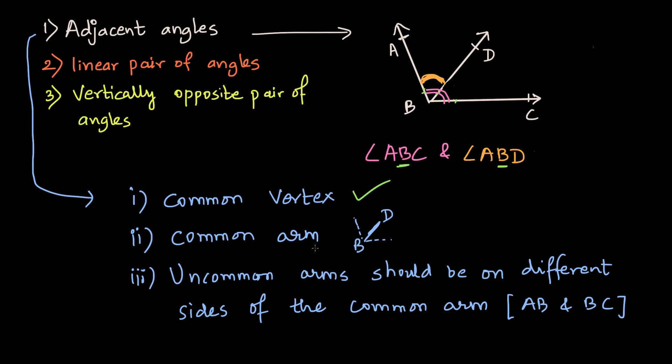Do they have a common arm? So let's remove this figure as well. Angle ABC and angle ABD definitely have this as a common arm, which is AB. You see AB is present in angle ABC and as well as in angle ABD. And that is why the second point is also satisfied.